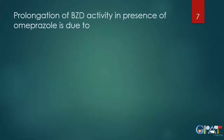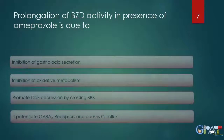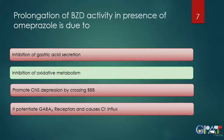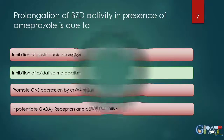The next question is: prolongation of benzodiazepine activity in the presence of omeprazole is due to — inhibition of gastric acid secretion, inhibition of oxidative metabolism, promotion of CNS depression by crossing the blood-brain barrier, or potentiation of GABA receptor causing chloride ion influx? The answer is inhibition of oxidative metabolism.